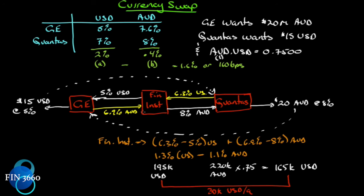However, this is today's exchange rate and the deal runs for five years, so the financial institution carries currency risk for five years. It can hedge on day one using forward contracts — we'll see how to calculate a series of forward rates when we value currency swaps. GE is happy with no currency risk and borrowing 70 basis points lower than it could have in Australian dollars. Qantas is happy with no currency risk and borrowing 70 basis points lower in US dollars. The financial institution makes a spread of $30,000 USD per annum on the two swaps combined.